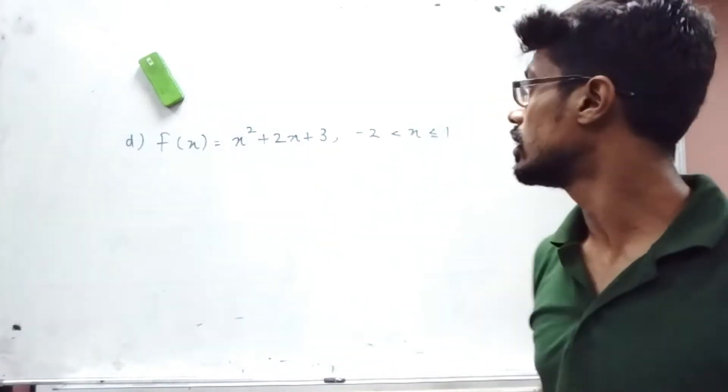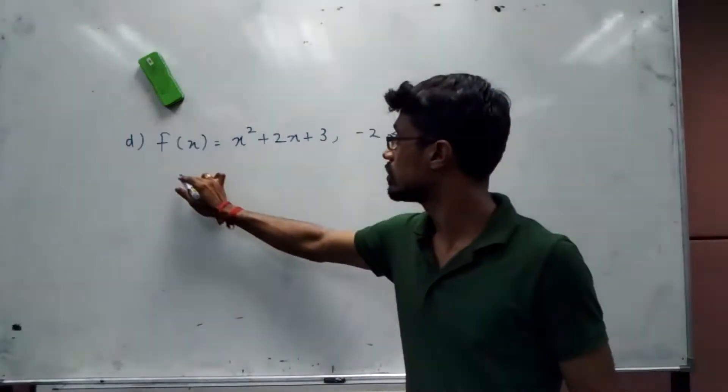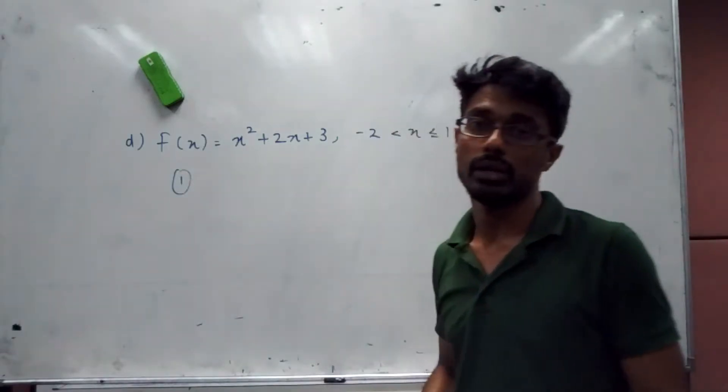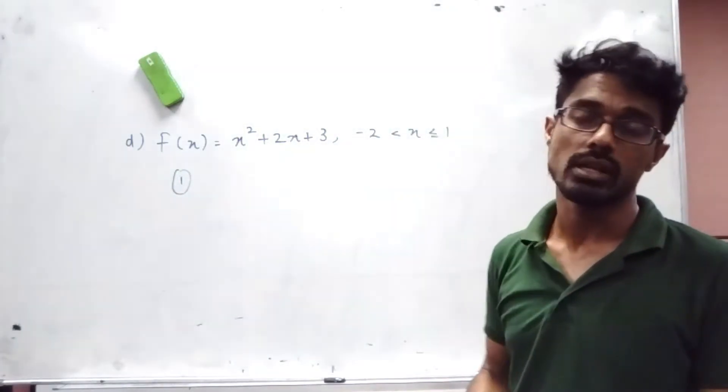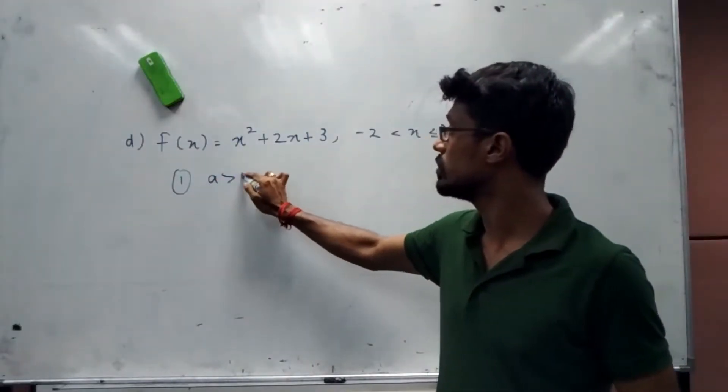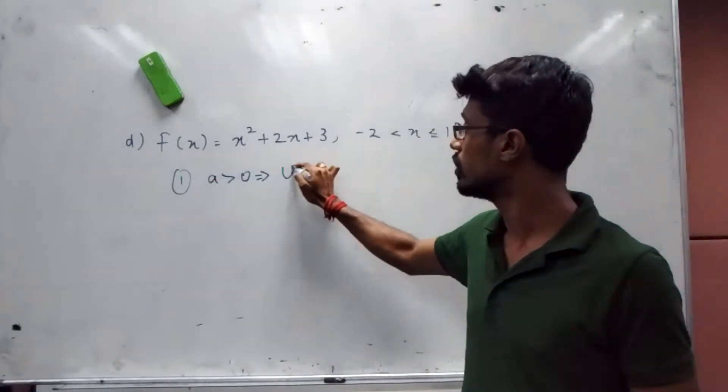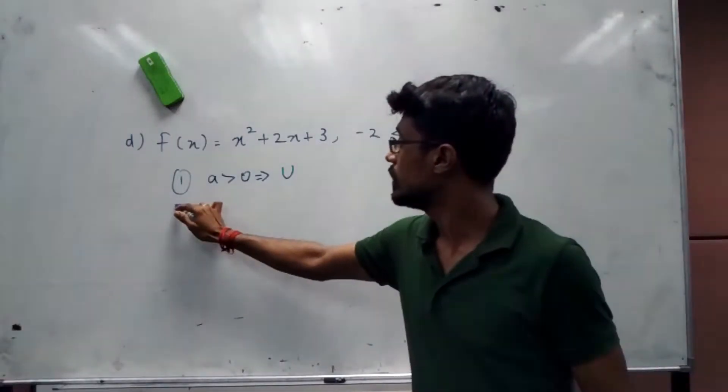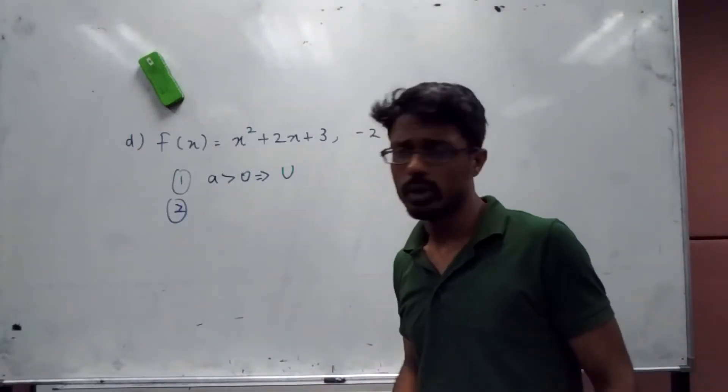If you just follow these few steps, you can easily obtain the final output. First, we need to pay attention to the value of a to know whether it's a happy graph or sad graph. Here the value of a is bigger than zero, so I'm going to get a happy graph that's number one.